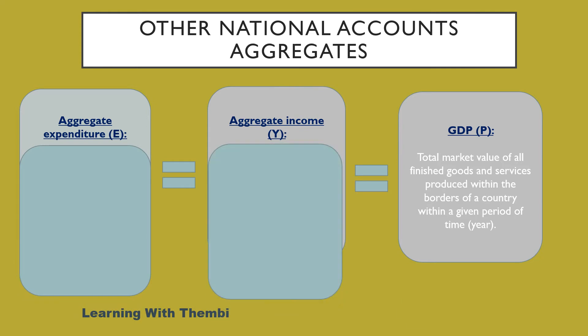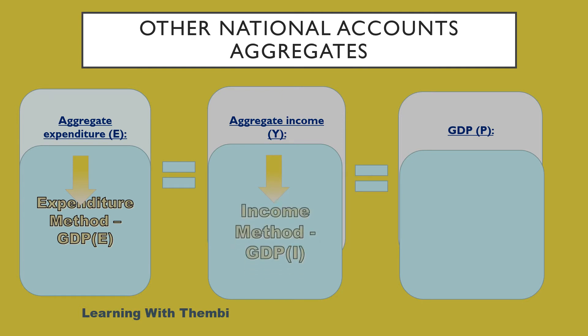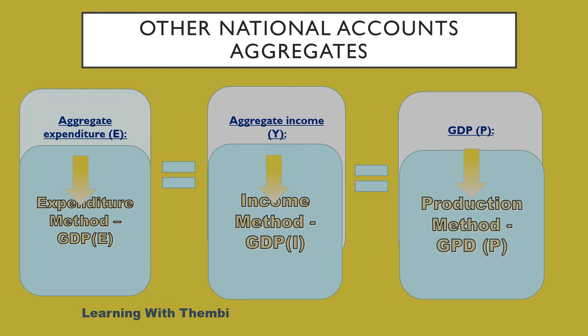This tells us that we have three methods to calculate the GDP: we can calculate the GDP using the expenditure method, the income method, or the production method.